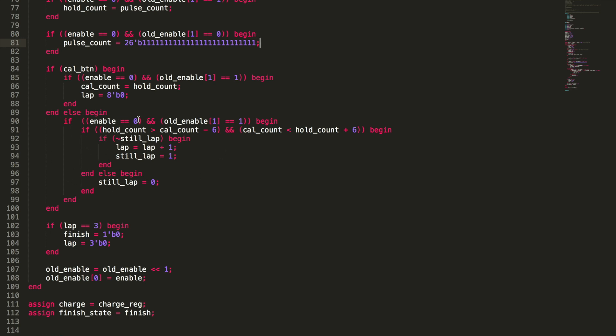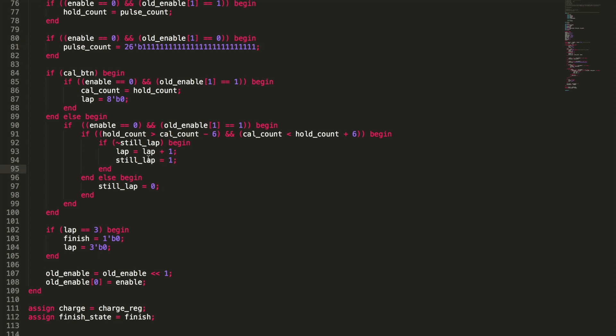Then if enable is zero and old enable is one, that means we get a rising edge on enable. And if hold count is greater than cow count minus six and cow count is less than hold count plus six, just setting up a window there. And if still lap is a zero, then we're going to say lap equals lap plus one. So that's basically, it's just counting saying, Oh, Hey, we must've seen a tape. We're going to add one to lap. Then we're going to make still lap one, because we won't basically, if we're still moving over that tape, we don't want to recount it every single time. So as long as it stays over the tape and we're not seeing any hysteresis there, we're not seeing it shut off. Then we're still going over the tape and this is still the same lap. We kind of got a way to clear that still lap and to turn it to zero after we've passed over the tape.